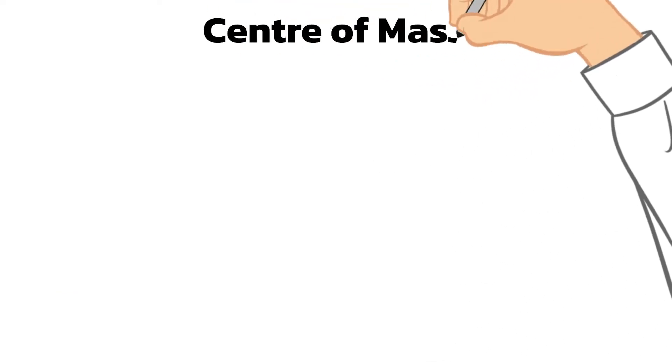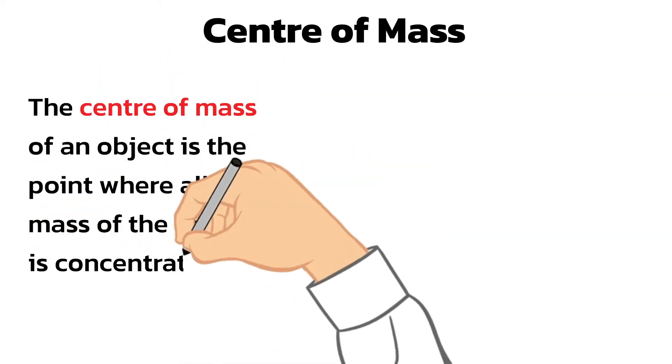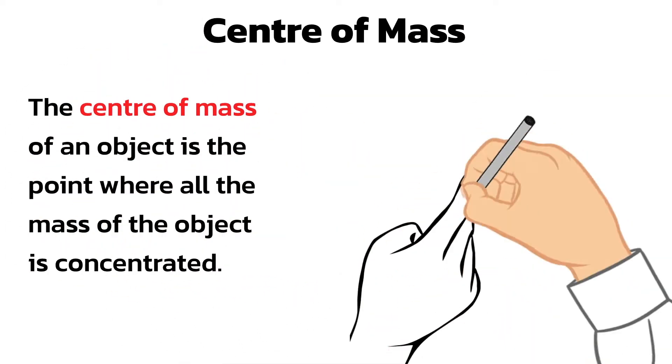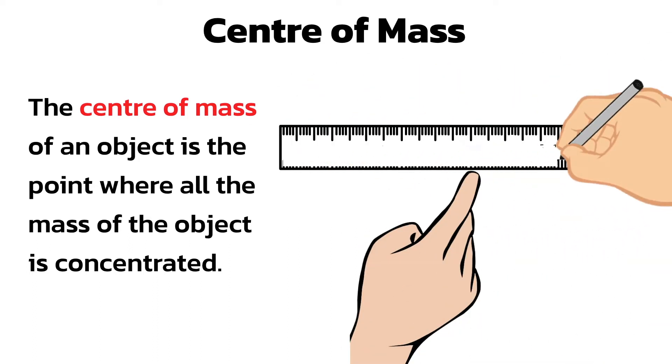The center of mass of an object is the point where all the mass of the object is concentrated. So to balance any object, like this ruler, you need to place your finger at its center of mass.